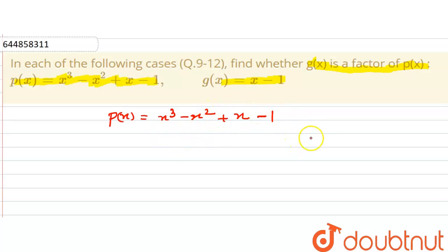Therefore, to find out the remainder, we have to equate gx is equal to 0. To find out the value of x here, we will get x is equal to 1.